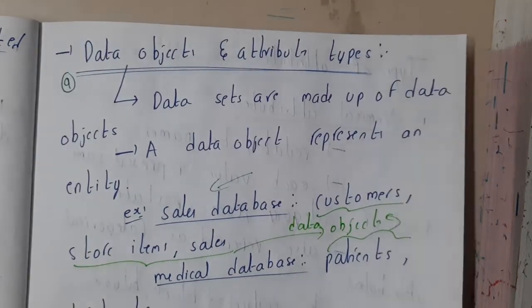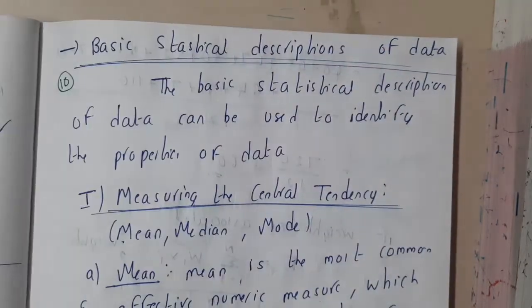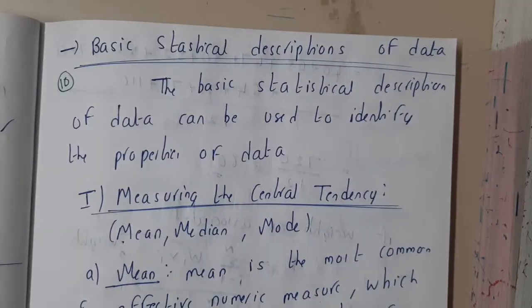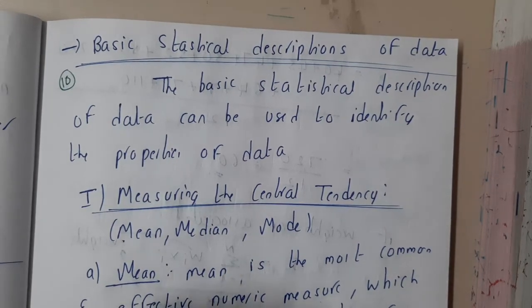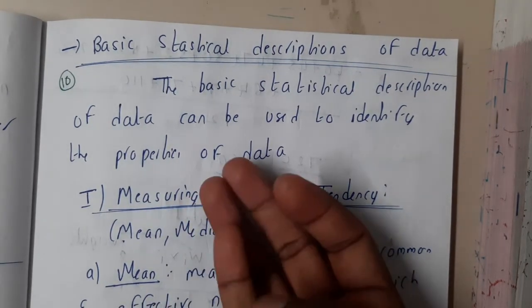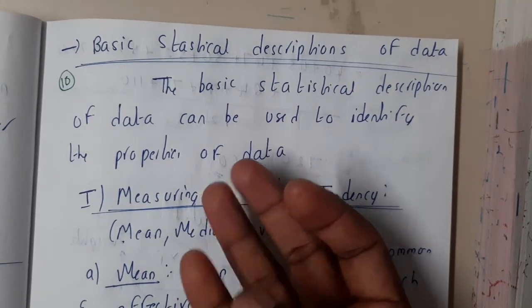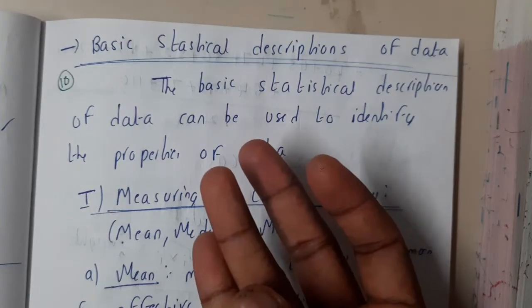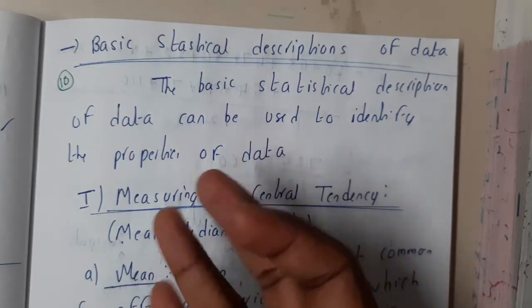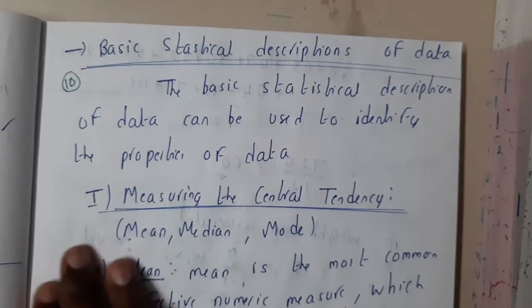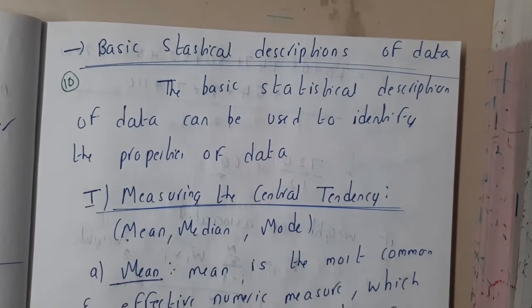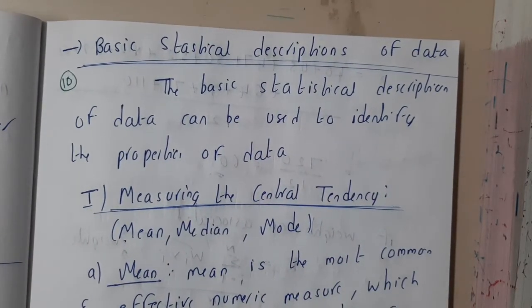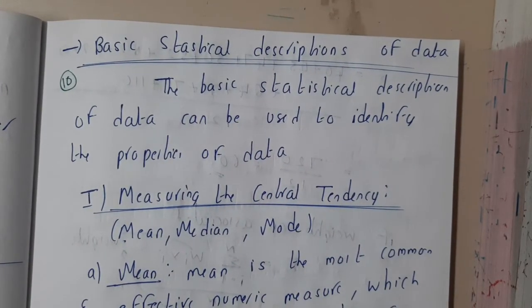I hope everyone got a basic idea about all these attributes, their types, and data objects. In the next lecture we will be discussing basic statistical descriptions of data — like mean, median, mode, variance, and related things. Let us meet in the next lecture. Thank you, thanks for watching.